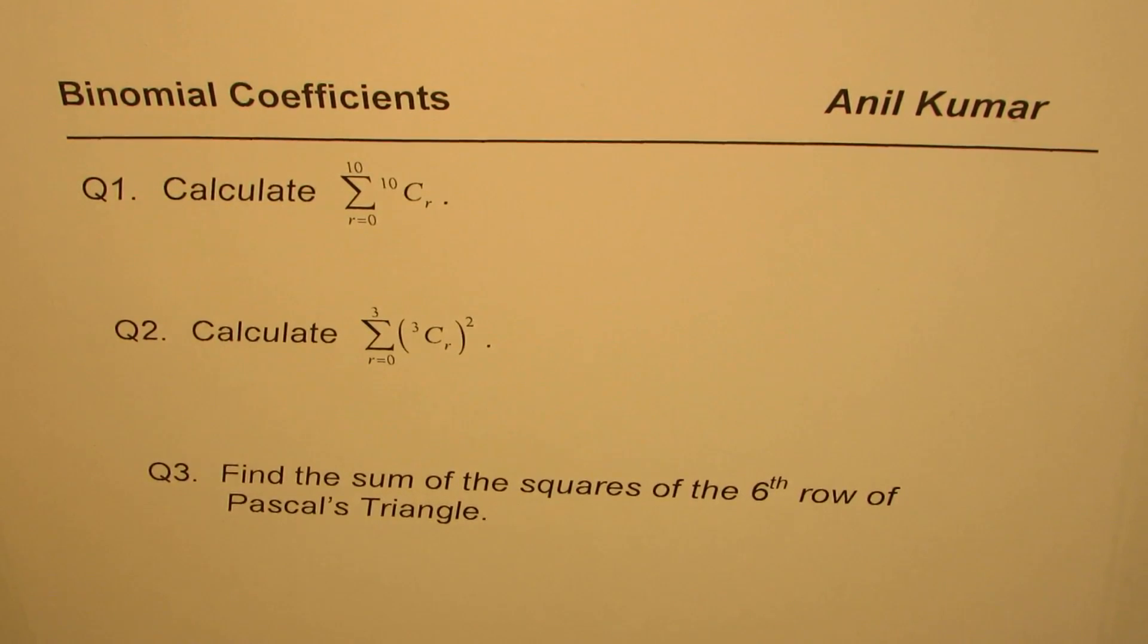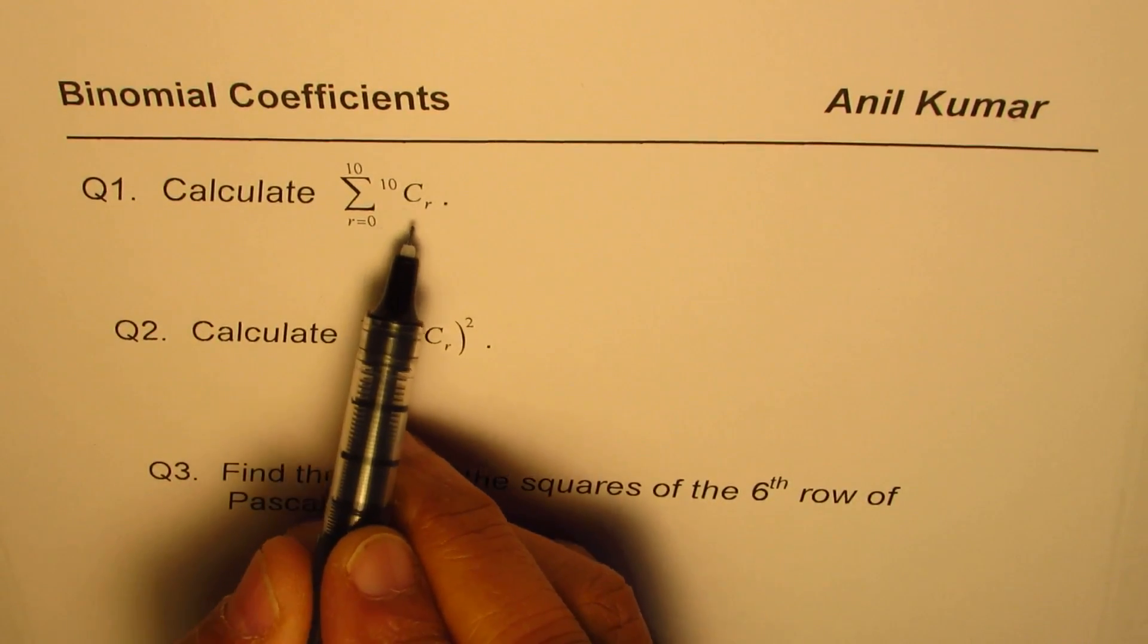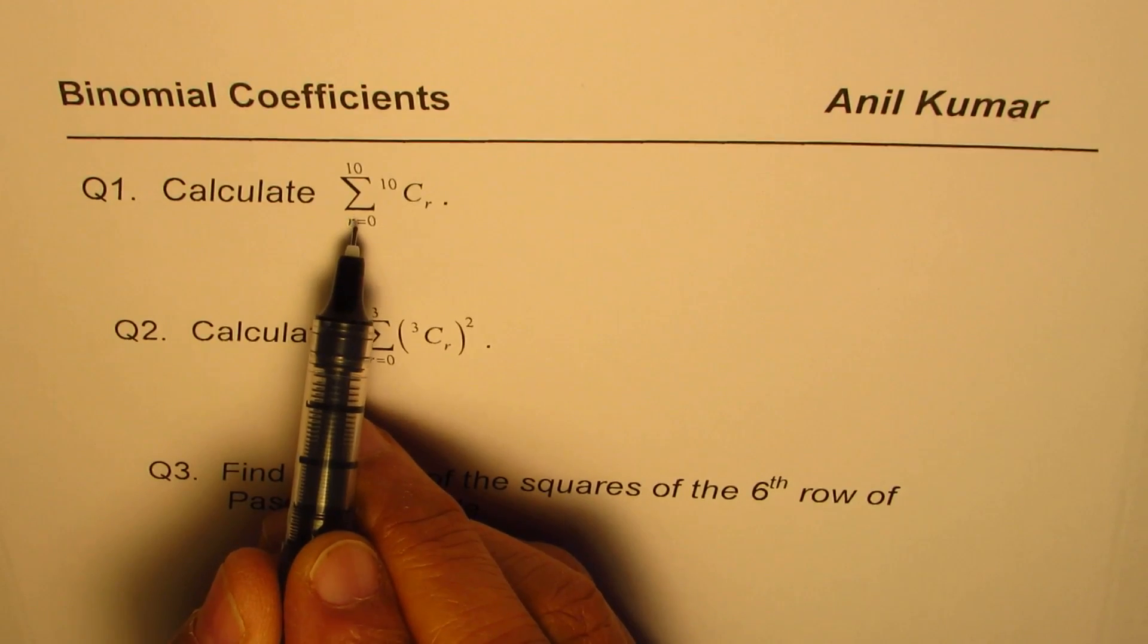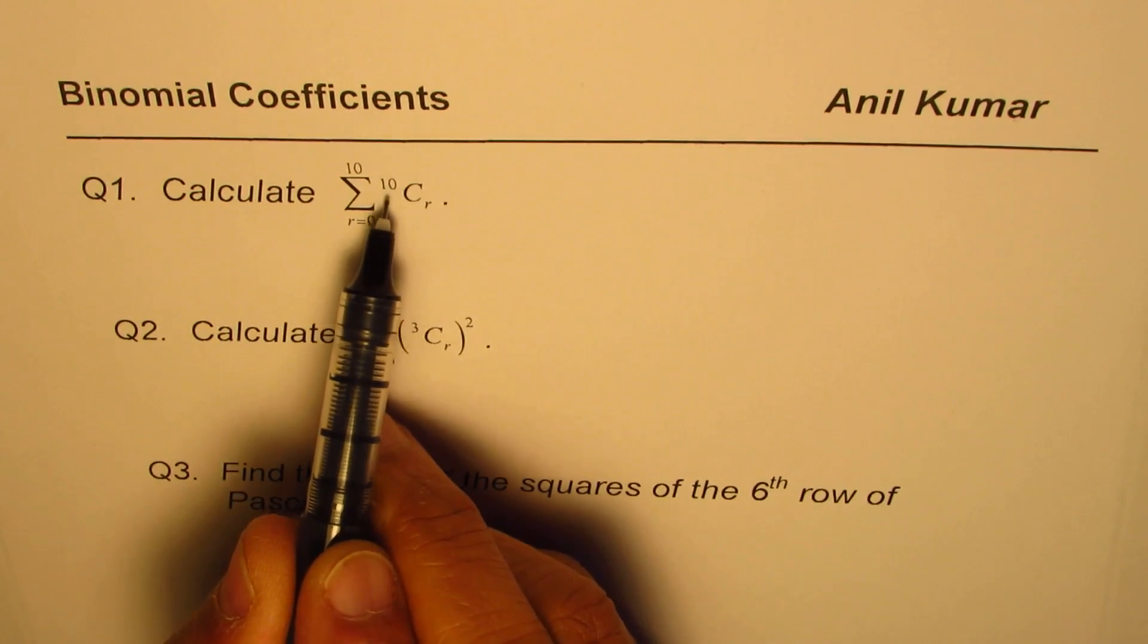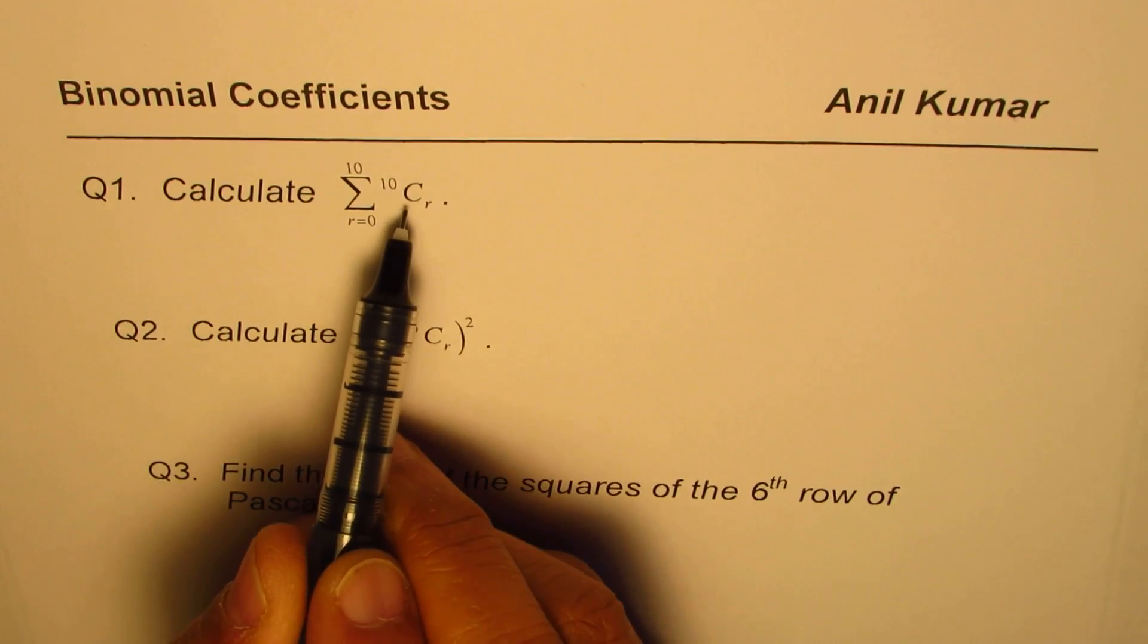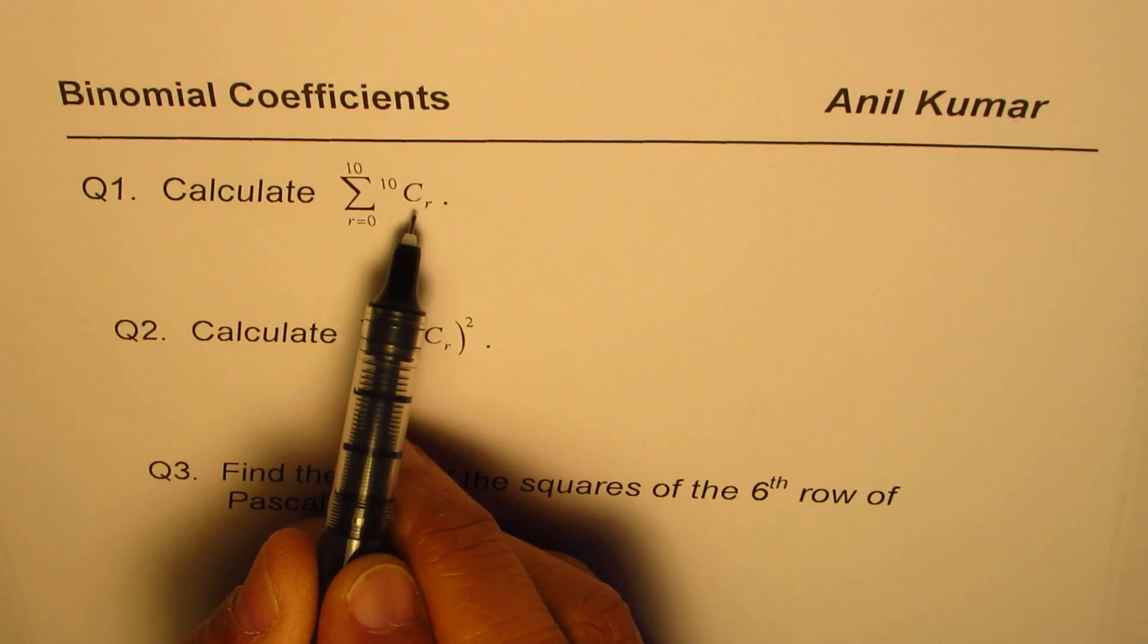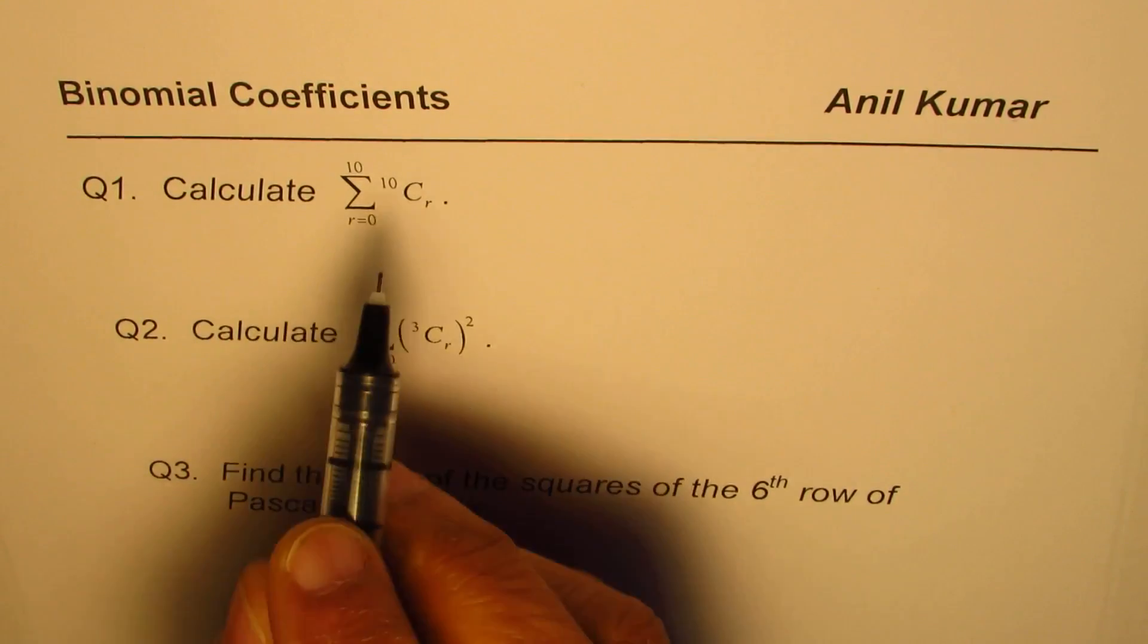You can pause the video, apply the properties of Pascal's triangle, calculate the result and then check with my solution. The very first one here is calculate sum of these entries in the Pascal's triangle. So these are the entries in the 10th row. So we are trying to find the sum of 10 choose r, where r moves from 0 to 10.